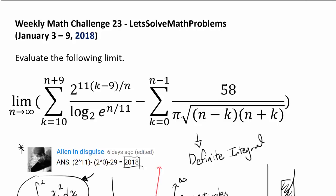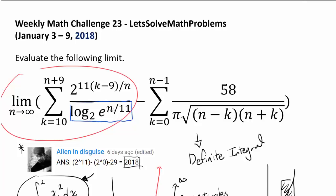Let's look at the first part: the limit as n approaches infinity of this summation. Before dealing with the summation itself, let's focus on log base 2 of e to the n over 11. Using the logarithm power property, the exponent n over 11 can be brought out as a constant multiple, giving n over 11 times log base 2 of e.